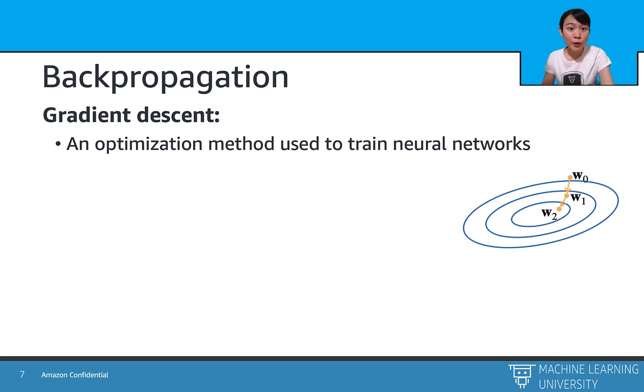For backpropagation, a widely used technique is called gradient descent. Again, it is an optimization strategy that is used to train neural networks. As what it is named for, the gradient descent calculates the gradients of each layer's forward functions, and optimizes the cost function c by moving the weights towards the direction of the steepest gradient descent iteratively.